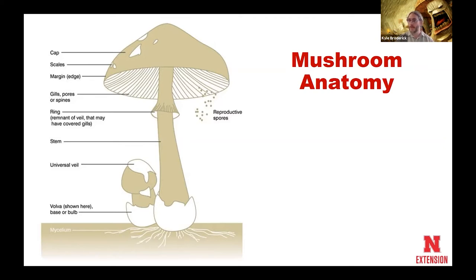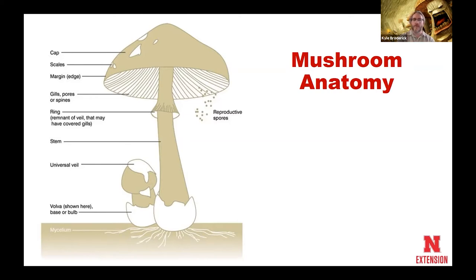Then we have our cap on top. Sometimes we will have some scales or other growths that form on the cap. Often those scales are a remnant of the universal veil that all mushrooms have, at least in their very early stages. If we look at the underside of the mushroom cap, there may be gills, there may be pores, or there may be spines. The gills, pores, and spines all have in common that they are where the spores are actually released.